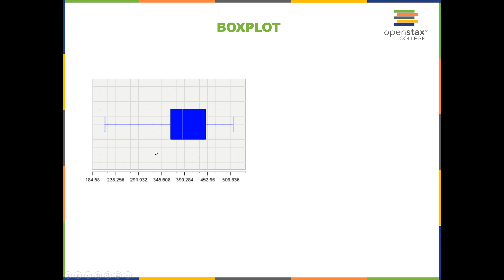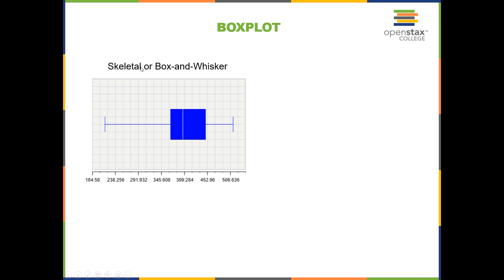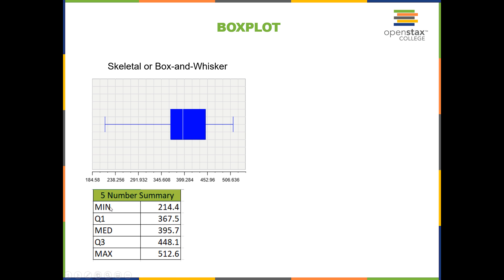This is what the most general form of a box plot would look like for this data set. This is usually called a skeletal box plot or box-and-whisker plot. Notice that no outliers are shown here. We have the minimum at 214.4, the first quartile at 367.5, and so on.